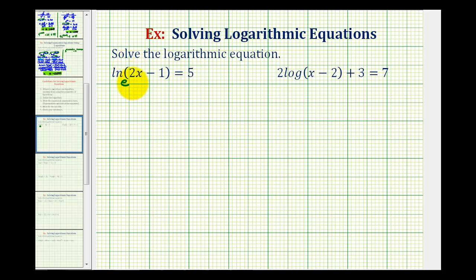Therefore in exponential form, e is the base, five is the exponent, and the number would be two x minus one. So e to the fifth must equal the quantity two x minus one.